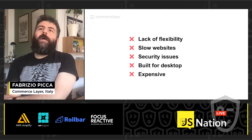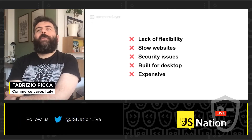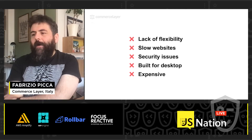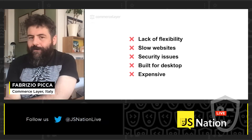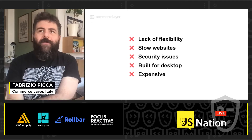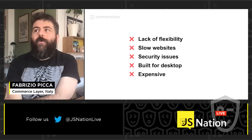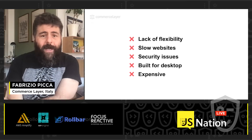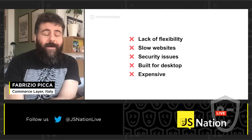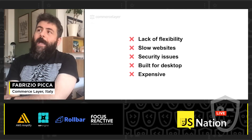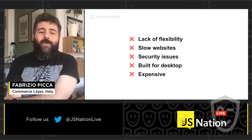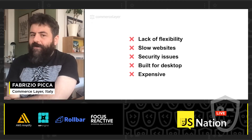The other problem with these traditional applications is that most of the time websites built on top of them are just slow. Given the architecture of those applications, it's very difficult to leverage the power of new concepts like dedicated CDNs. A slow website can be a big problem, especially considering things like the new Google algorithm for ranking — the core web vitals. Being fast is definitely a competitive advantage when selling online. There are also security issues: if everything is inside one box, you have a single point of failure.